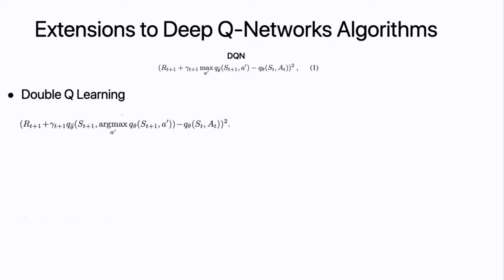Firstly, there's Double Q-learning. The authors realized that using DQN itself there's an overestimation bias. So they actually decoupled the online learning component. If you were to compare the differences from DQN, it's just that a particular Q value is actually removed from the deciding factor.